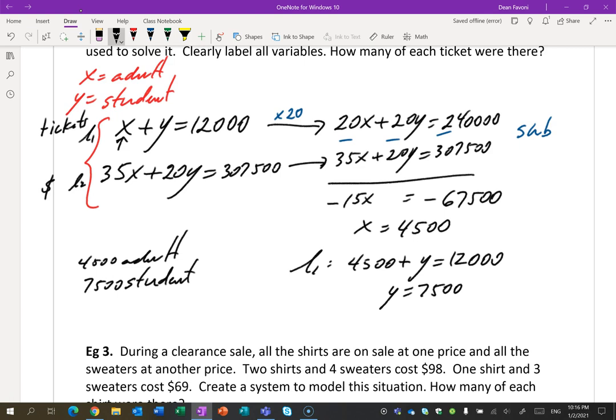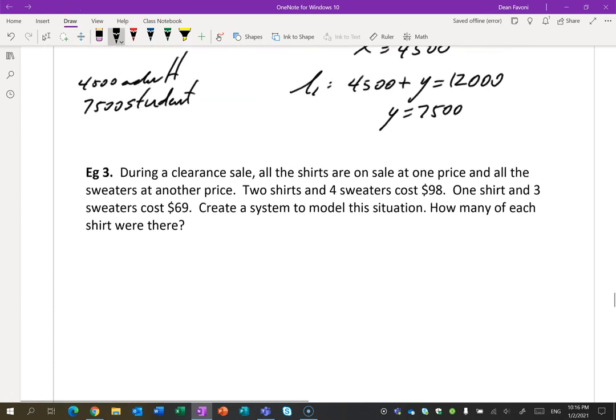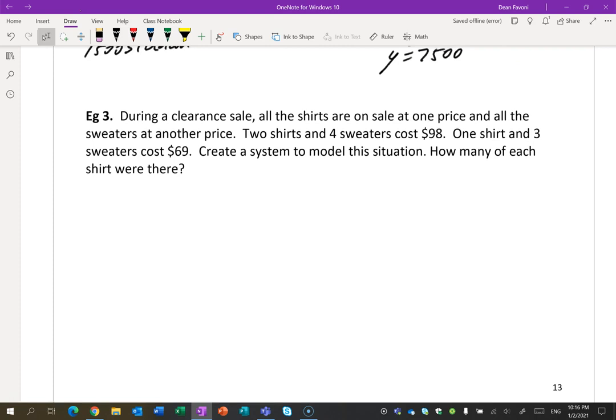Big numbers, and until you practice some of these, they're not going to seem obvious what to do. Let's try another one here. During a clearance sale, all the shirts are on sale at one price and all the sweaters are on sale at another price. Two shirts and four sweaters cost $98. One shirt and three sweaters cost $69. Create a system. How many of each? Let's do this. X will equal shirts and Y will equal sweaters. I want you to pause it and see if you can come up with a solution. Not the full solution, just the system. I don't want you solving it. Just come up with what the two equations are and then come back and we'll check. So pause the video now and then return when you're done.